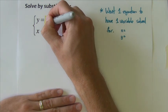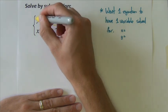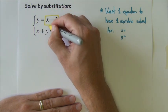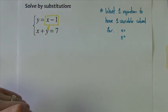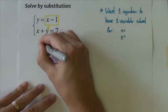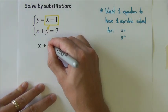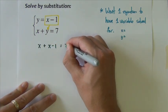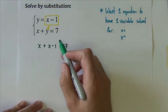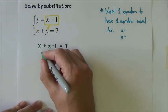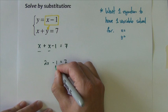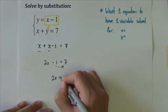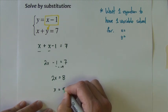What I'm going to do is take x minus 1, which is the same as y, and substitute it or replace it in for y in the other equation. So this other equation becomes x plus, instead of y, x minus 1 equals 7. Now we have one equation with a single variable. We can add our like terms. So we get 2x minus 1 equals 7. Add 1, so we get 2x equals 8, and x equals 4.